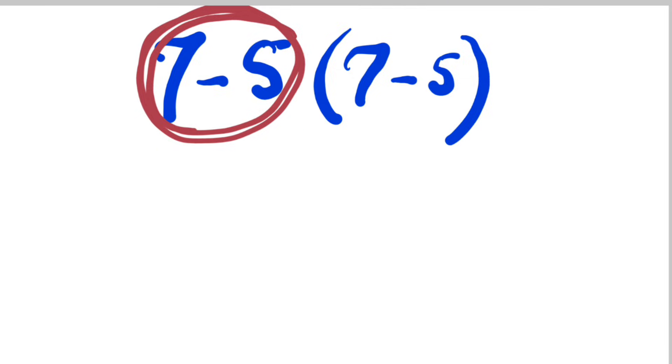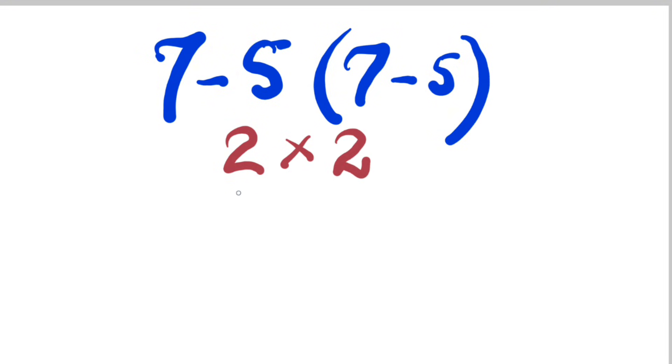Both are 7 minus 5 which will be equal to 2 times 2, and 2 times 2 will be equal to 4. But I have mentioned that 4 is not the correct answer.